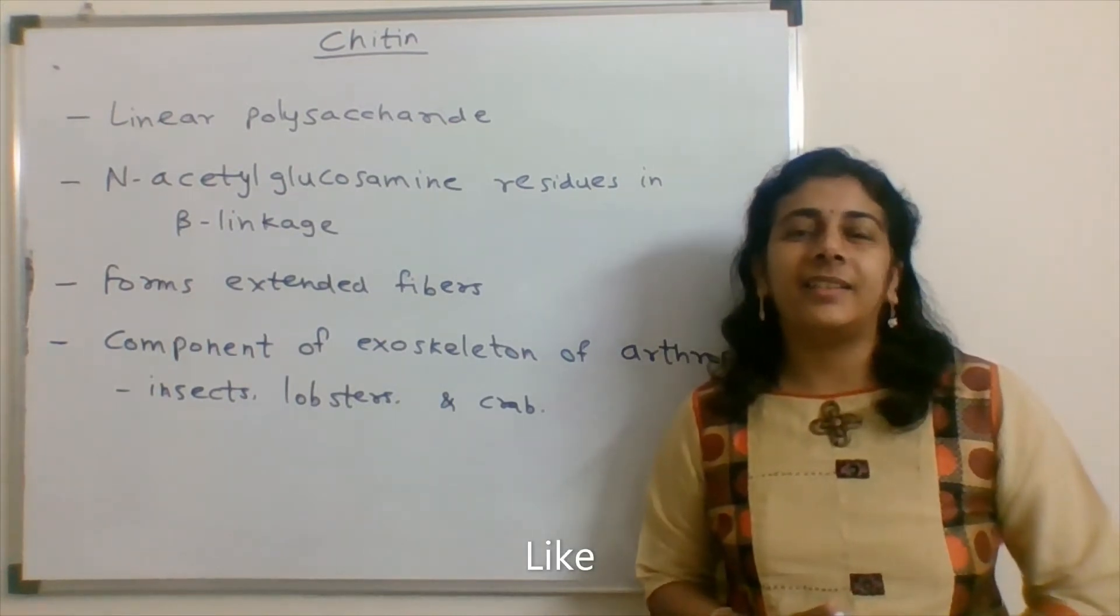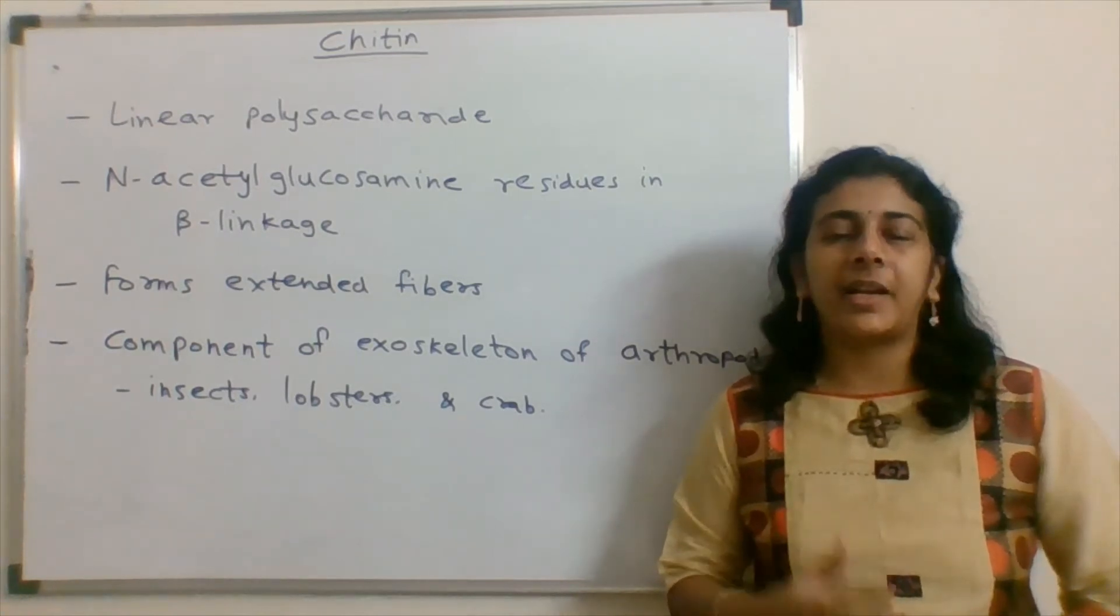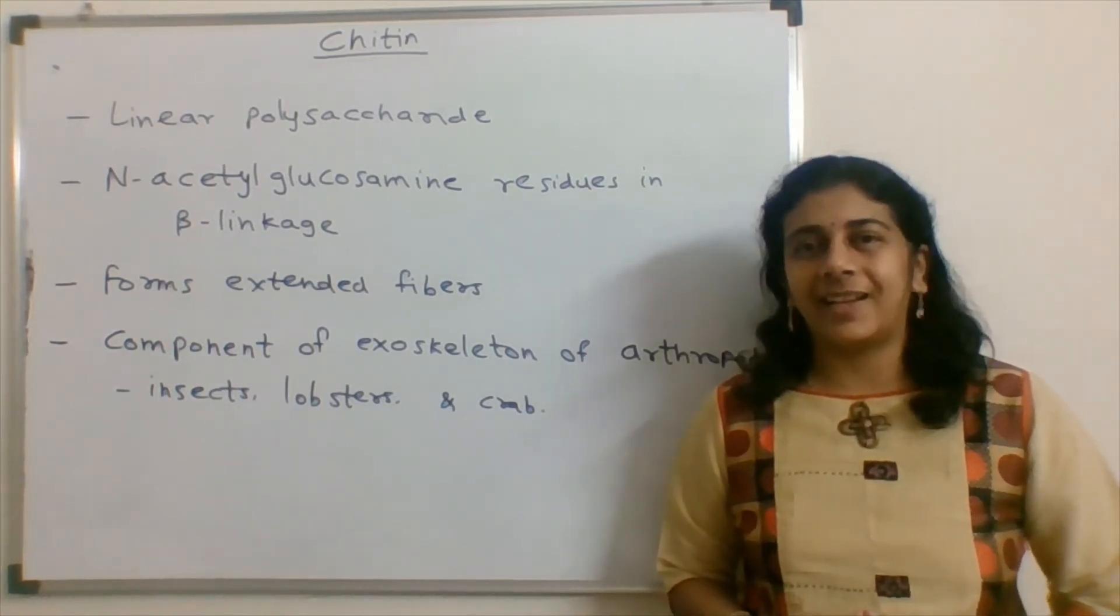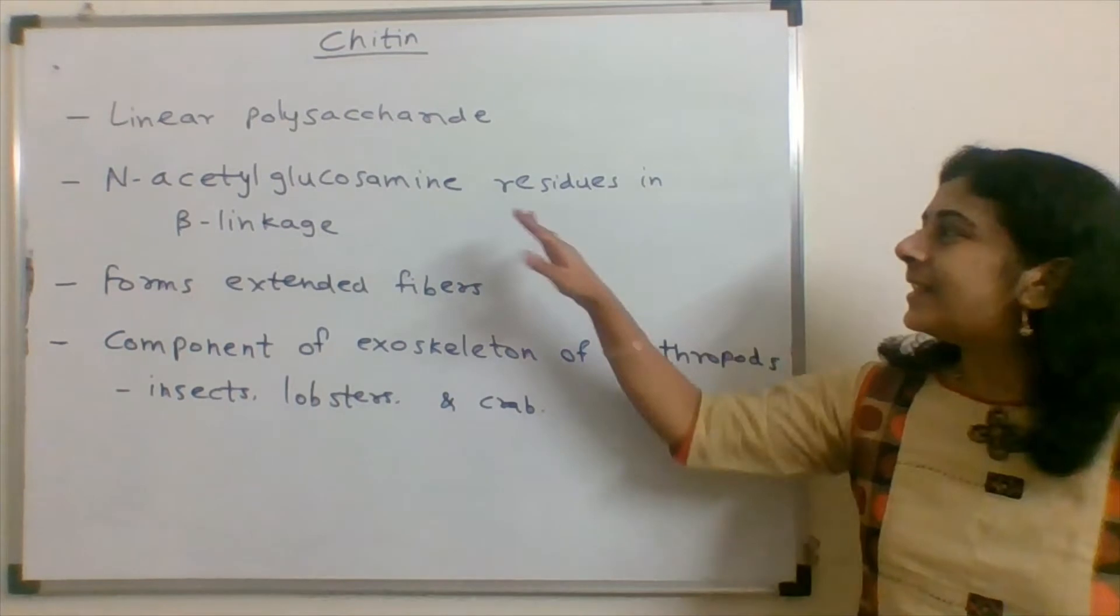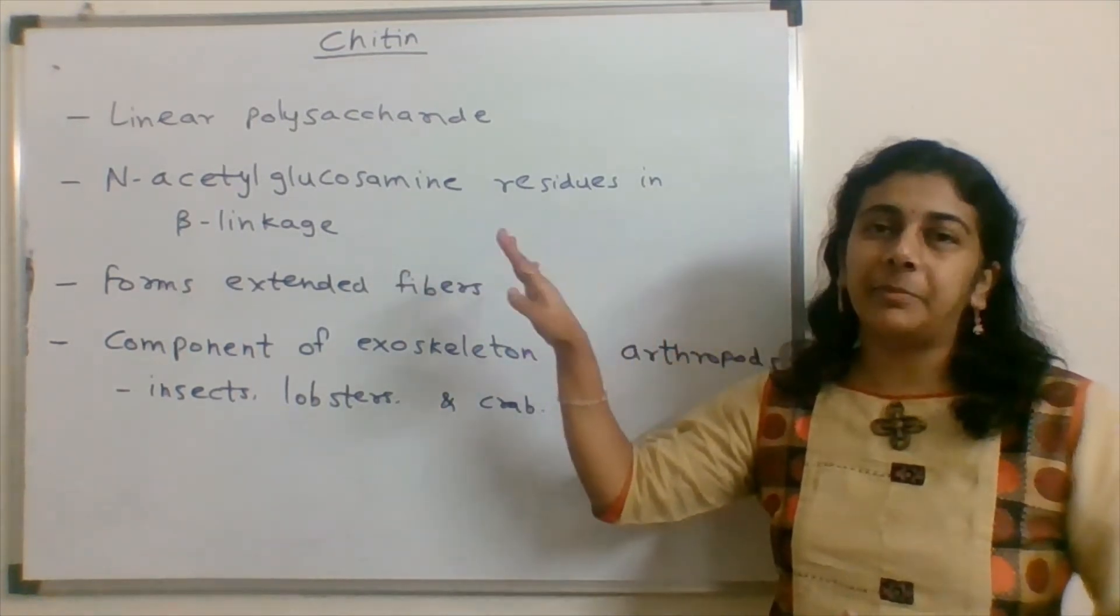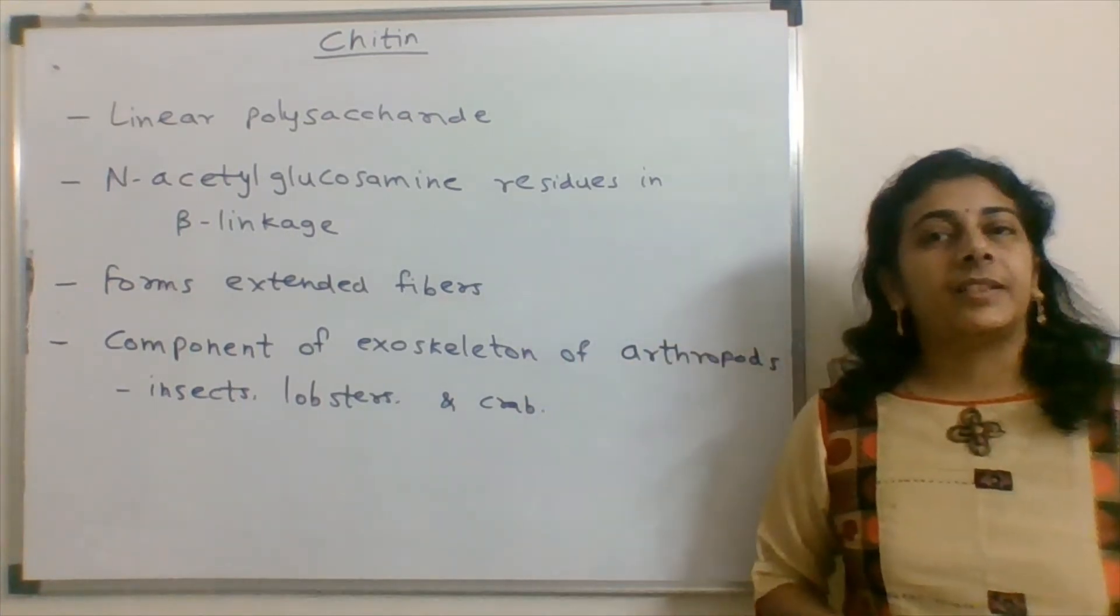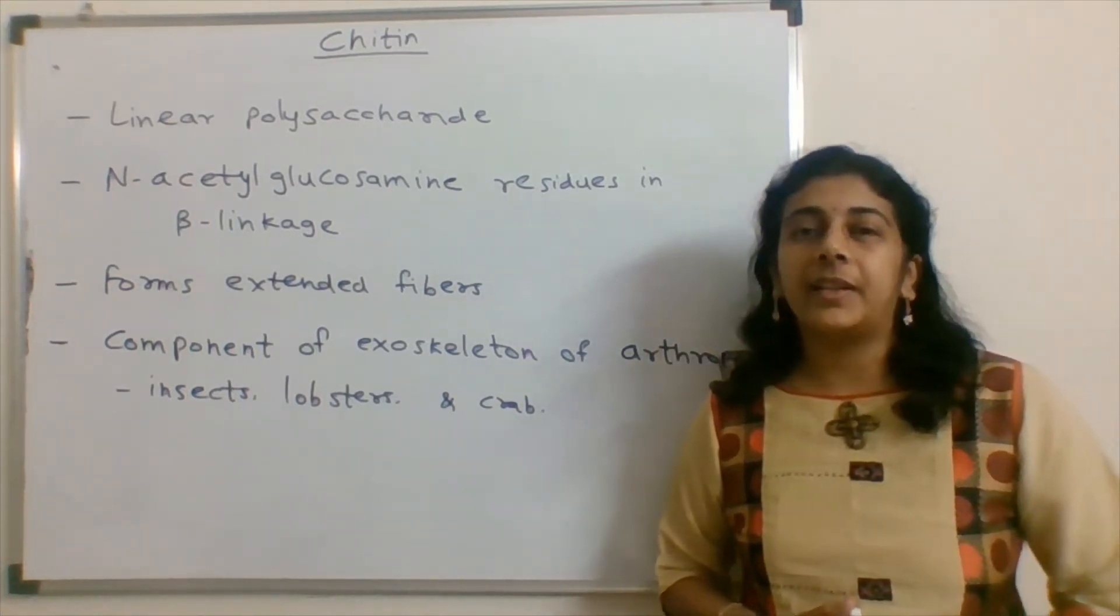When we say chitin, it is a linear polysaccharide. It is just like cellulose; there is a minor difference in cellulose and chitin. It is made up of N-acetylglucosamine and having a beta linkage in between. It forms extended fibers.